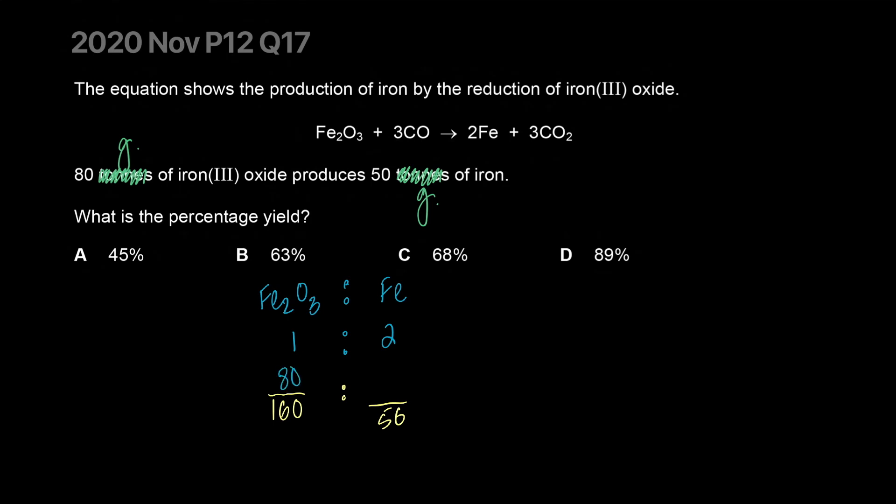So I'll just erase it, what am I doing? Right, 80 over 160, so that's 0.5 moles, 0.5 moles, right? And 0.5 moles would have produced, let's do that math here, 0.5 moles should have produced twice that amount, 1 mole. So 1 mole is actually 56 grams of iron, yes? So let's do this ratio again.